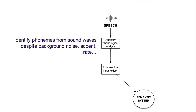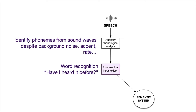The phonemes are picked out in order, words are identified in terms of where one word ends and another begins, and then it's passed to the phonological input lexicon. This is where word recognition occurs — have I heard this word before? It's important to know that this input lexicon does not contain or light up the meaning of a word. It just recognises that word.